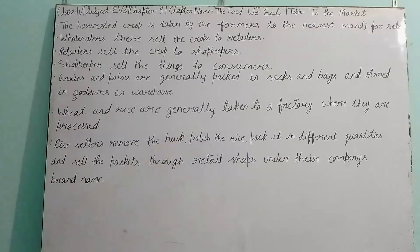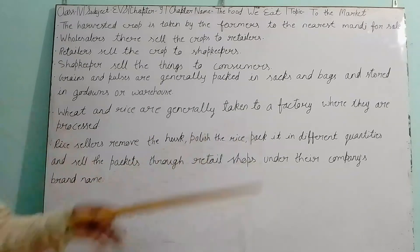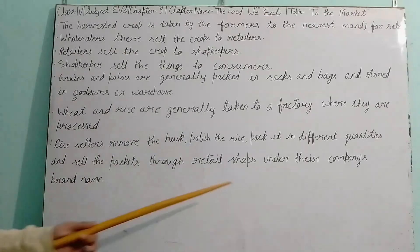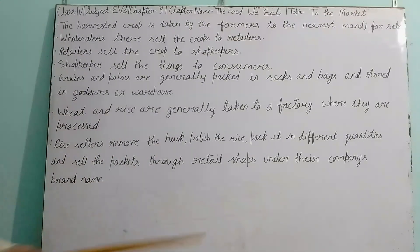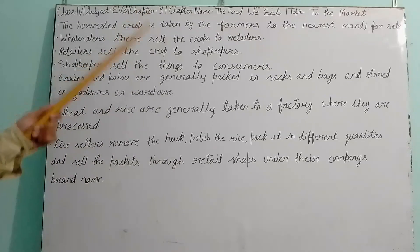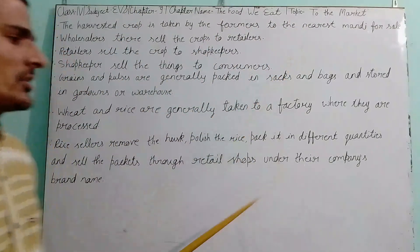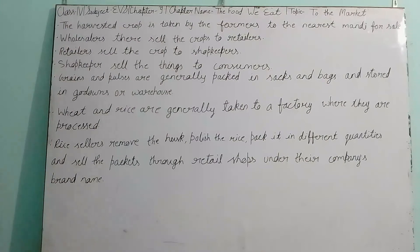The factory takes responsibility to make the rice clean and sells it under their brand name. They make the packets, write the brand name on them, and then it is sent to the retailers for selling at the shop. This is the process by which crops from the market come to our home.